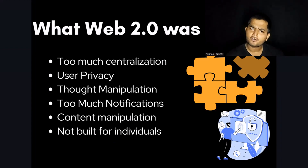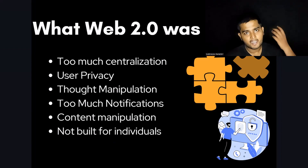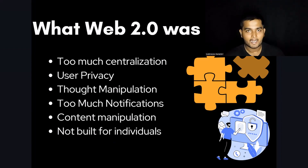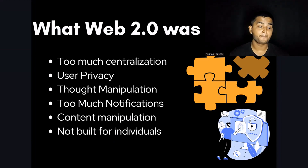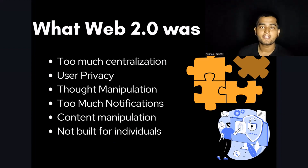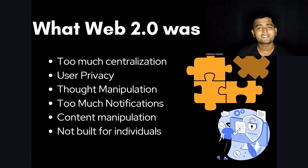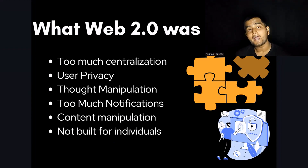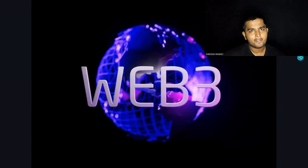This means full control is in the hands of the developer or the person at the back end. These were the major limitations of Web 2.0, which created the need for a new internet — one where things are open source, not centralized, and users have power. And that's how Web 3.0 came into existence.